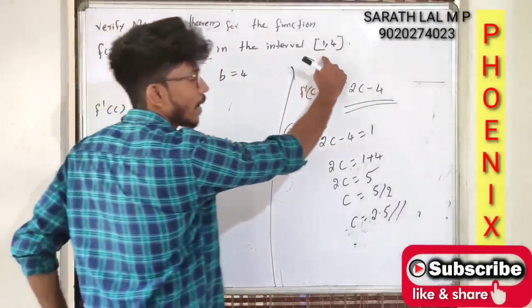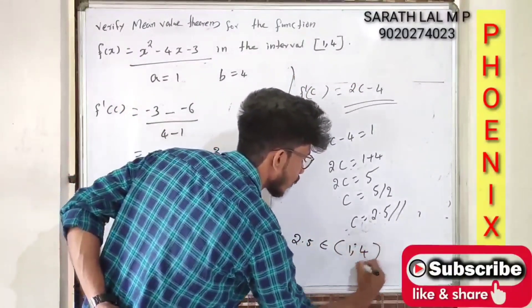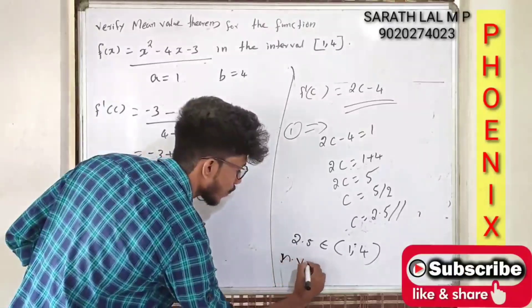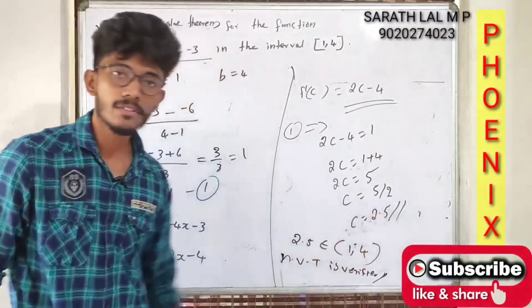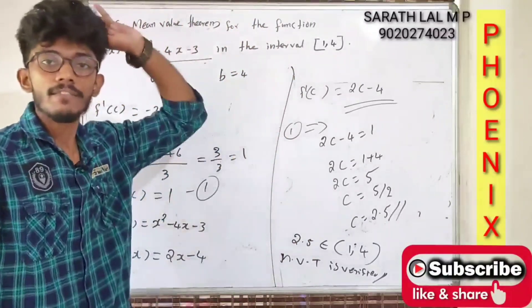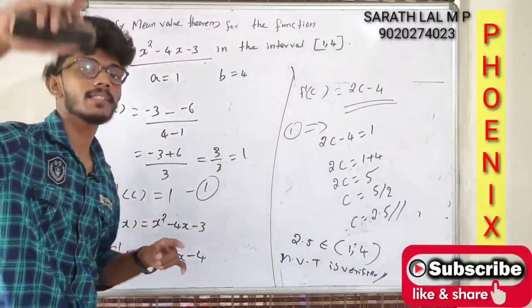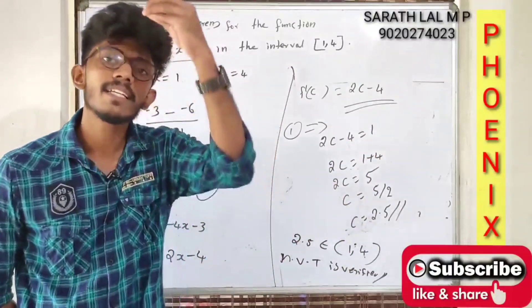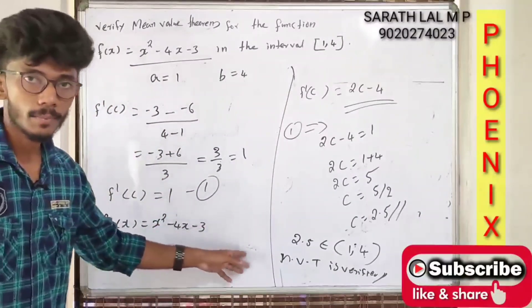Since the interval is [1, 4] and 2.5 belongs to (1, 4), the Mean Value Theorem is verified. The value c = 2.5 satisfies all the required conditions.